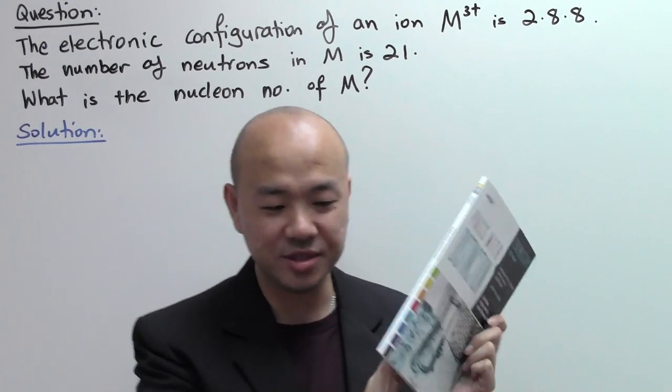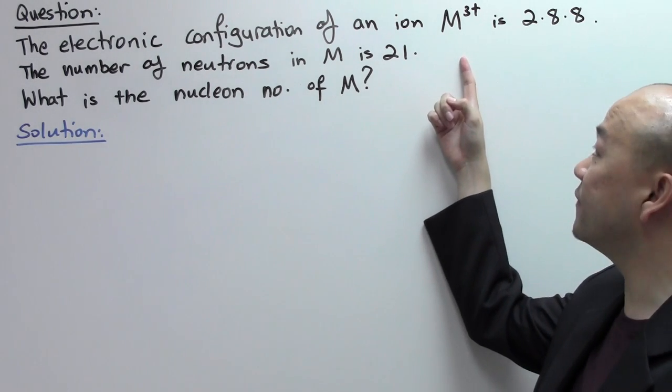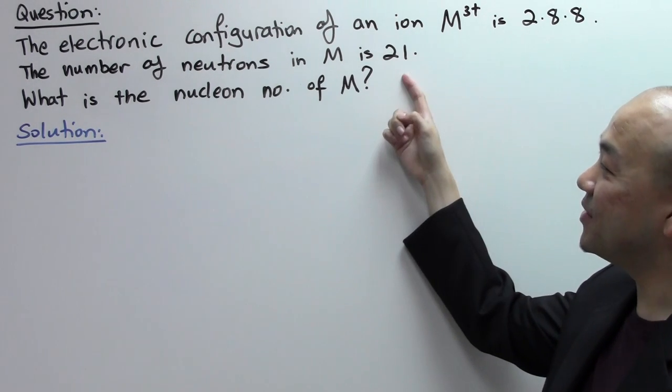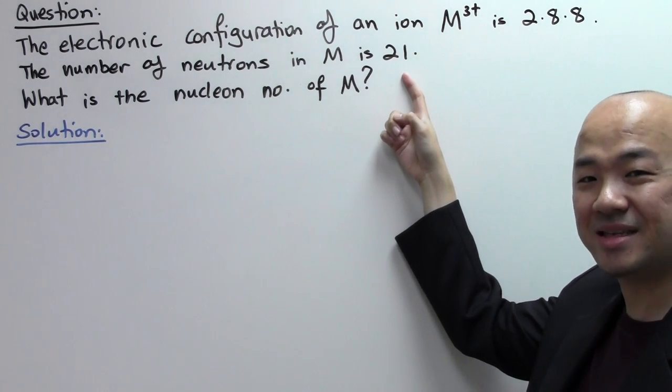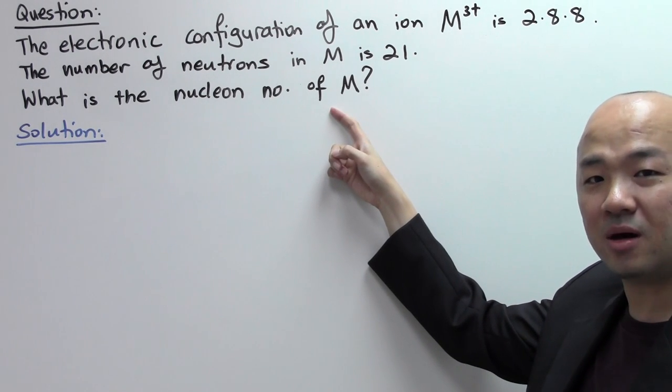Let's take a look at the question. Now the question goes like this. The electronic configuration of an ion M3+ is 2.8.8. The number of neutrons in M is given as 21. So the question asks you what is the nucleon number of M.